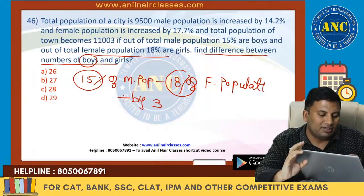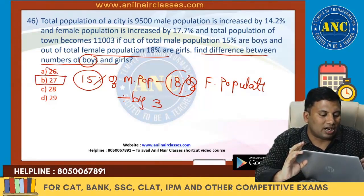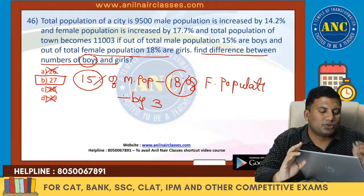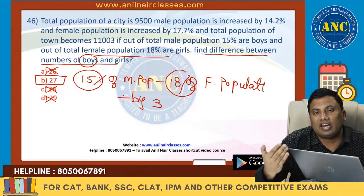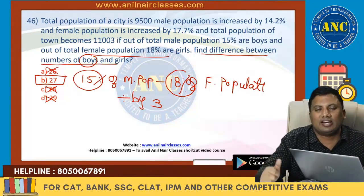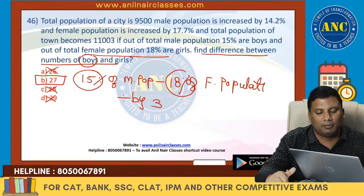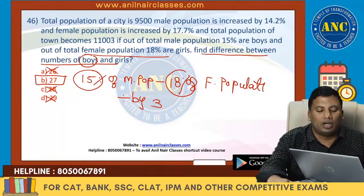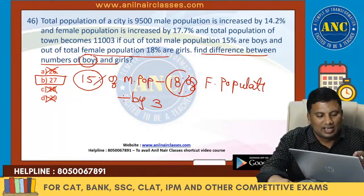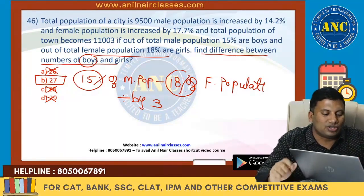The answer should be divisible by 3. Only one answer option is divisible by 3. If more than one answer option were divisible by 3, I would have needed to find the actual values. When I read the question, this was a 5-second problem.